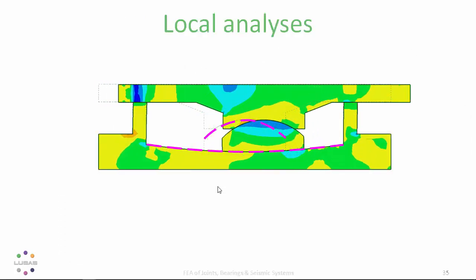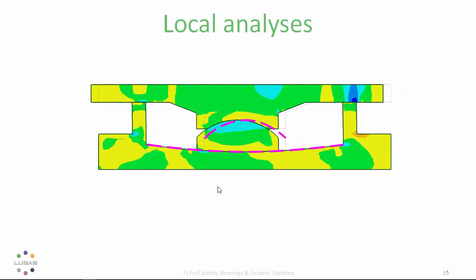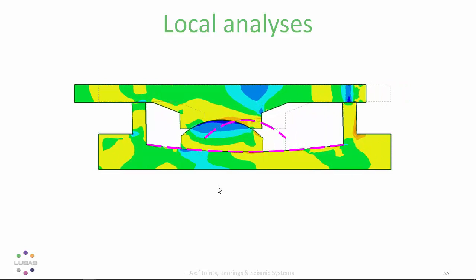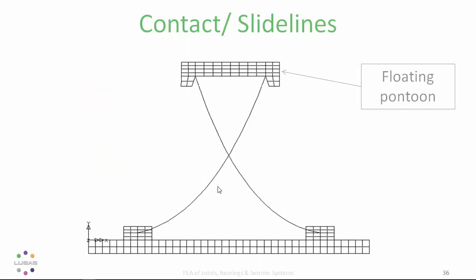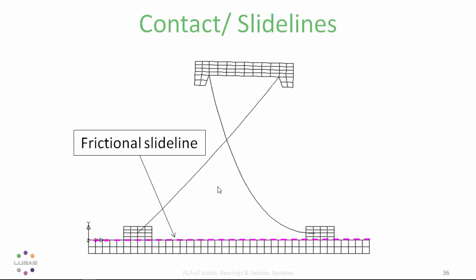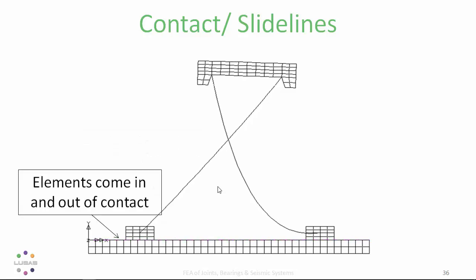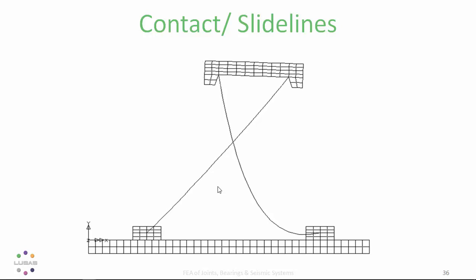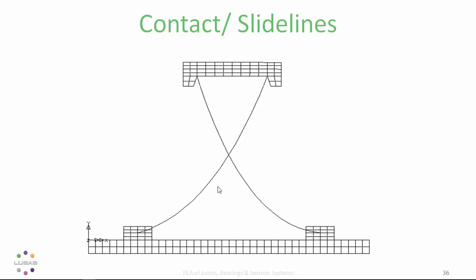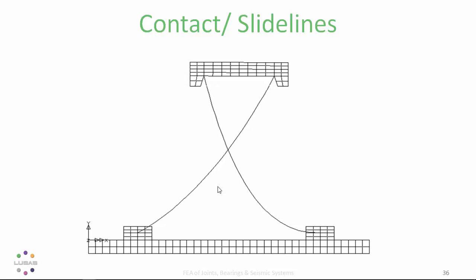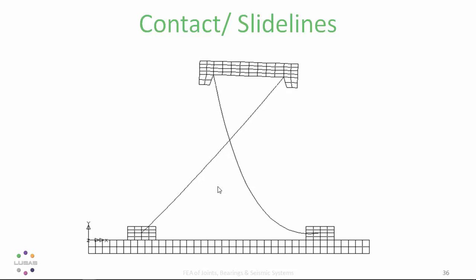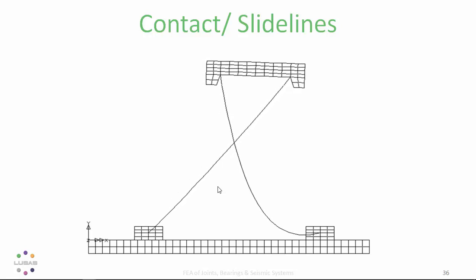Thinking back to local analysis: although joint elements can model contact and lift-off, where elements move over one another with relatively large displacements, a contact algorithm known as a slide line — or in 3D, a slide surface — is a more powerful computational tool. A frictional slide line example shows clearly how contact is transferred from element to element: a floating pontoon restrained by cables to two anchor blocks on a riverbed, where the cable becomes taut and the left block is dragged along the riverbed with elements coming in and out of contact.